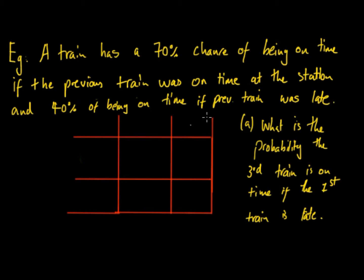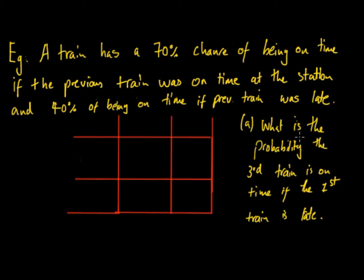We can see it's a Markov chain question because firstly there are two outcomes, it's dependent on the probability of the previous train, and unless it says otherwise, we can assume that the conditional probabilities are constant.